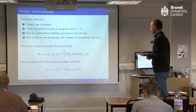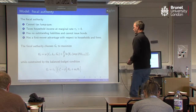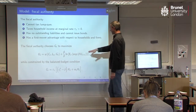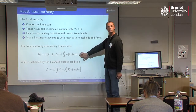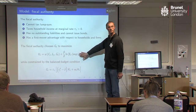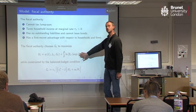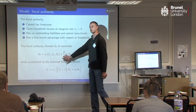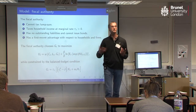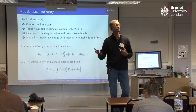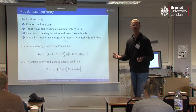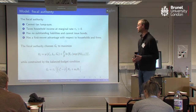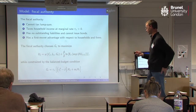Later on, I'm going to allow this theta — the government's theta, or the fiscal authority's theta — to differ from the household's theta. You can see how that matters. And that's a sense in which we can have two agents with different levels of risk sensitivity in the economy.